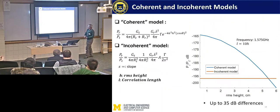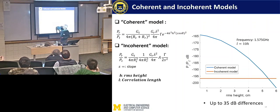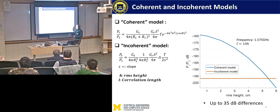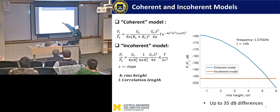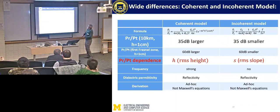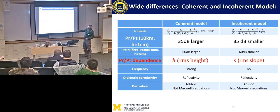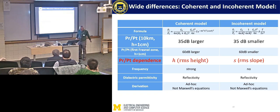In the past, people used two models. One model uses only the coherent field; the other only the incoherent field. The power in the coherent model depends on the RMS height, while the incoherent model depends on the RMS slope. When we plot these as a function of RMS height, we can see that the coherent and incoherent models differ by something like 35 dB — a very large difference. So we were puzzled. The coherent model is 35 dB larger than the incoherent model, and it's a very big debate: when we go to the field, do we measure RMS height or do we measure RMS slope?